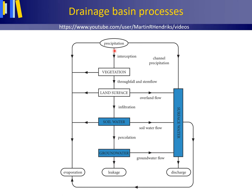Here is precipitation. Precipitation is intercepted — a process called interception. There is interception storage on the vegetation, on leaves and branches. From there, water can evaporate in a process called interception evaporation. Or water can drip from the leaves as throughfall, or flow along the stem of trees as stemflow.